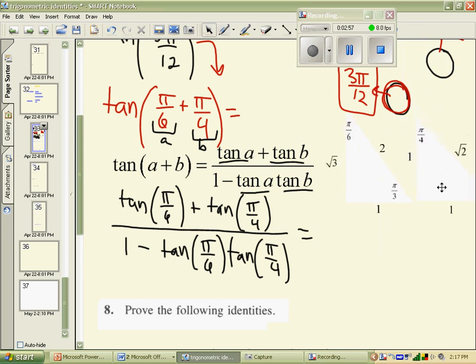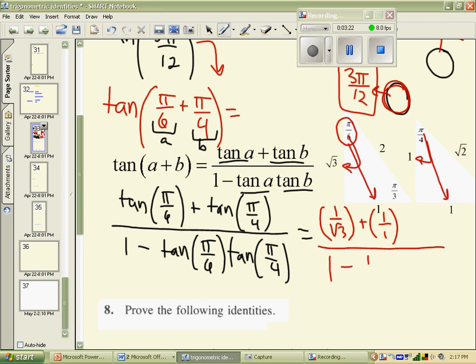Tangent of π over 6 is opposite over adjacent, so we have 1 over root 3, and tan of π over 4 is, of course, opposite over adjacent 1 over 1. So now we have 1 over root 3 plus 1 over 1 divided by 1 minus 1 over root 3 times 1 over 1.